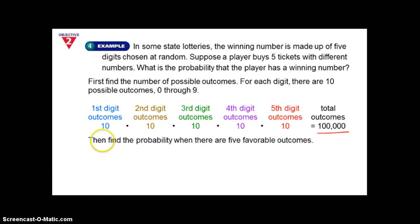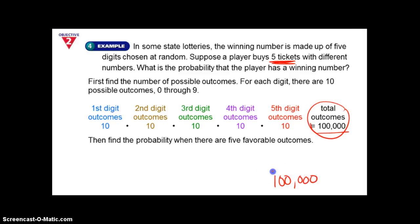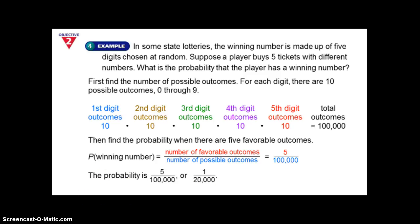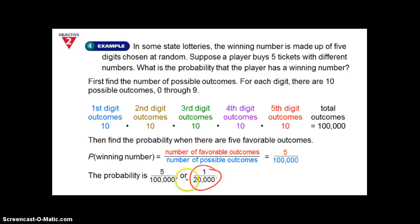There are five favorable outcomes because the player bought five tickets. So there are 100,000 total outcomes on the bottom of our fraction and five tickets on top, giving us five over 100,000. We find the probability by reducing, and we get one over 20,000.